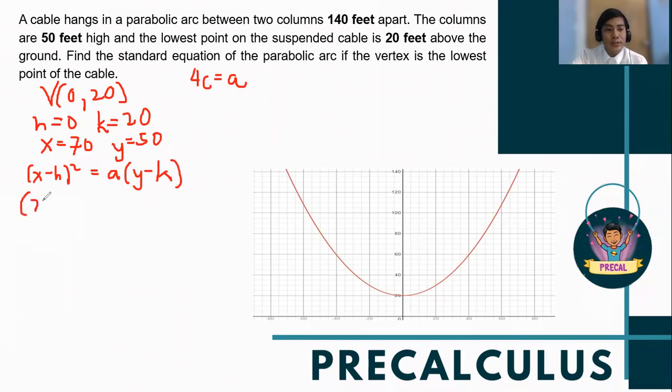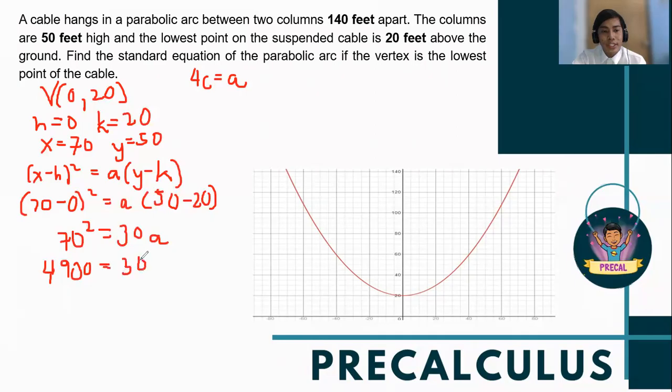Substituting the values. So we will have (70 - 0)² = a(50 - 20). So we'll have 30a = 70². So we'll have 4900 = 30a.